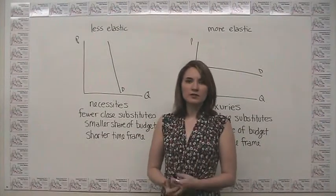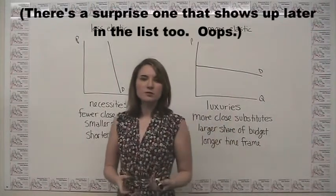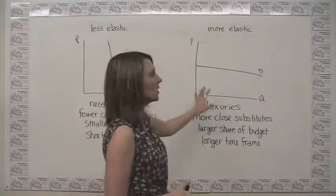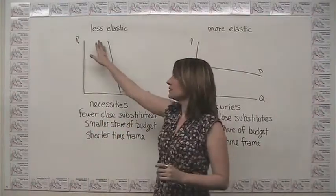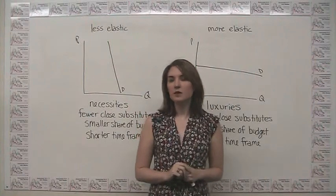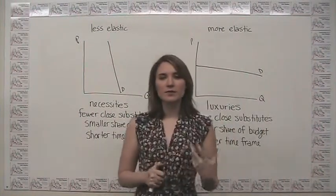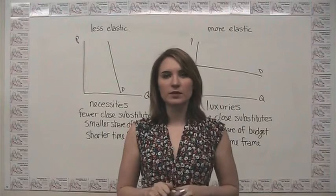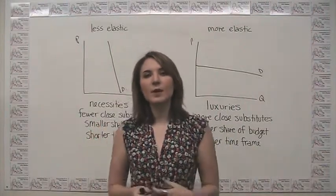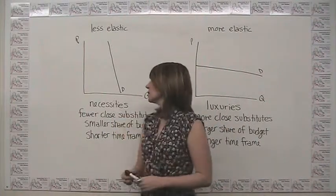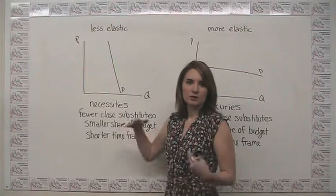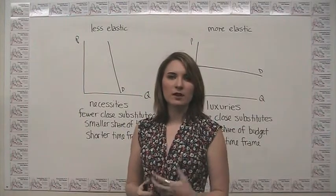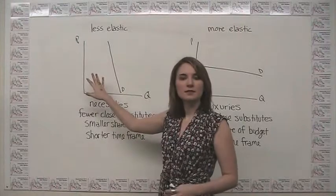We can talk about a number of general rules regarding elasticity. The first rule is that necessities tend to have more inelastic demand than luxuries. If something is a necessity — food, shelter, clothing — we're not likely to change our behavior a whole lot if the price of that item changes. So that's going to be in the less elastic category.